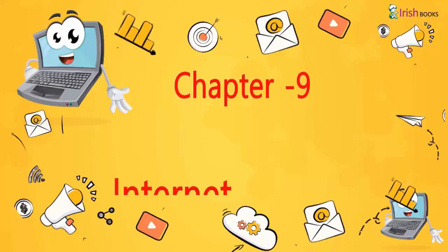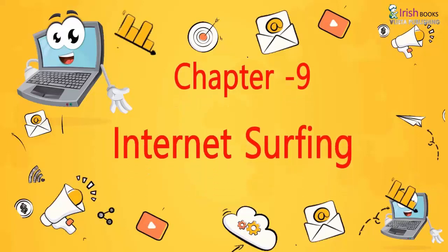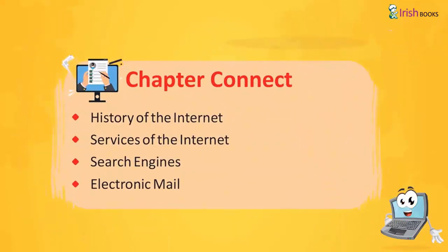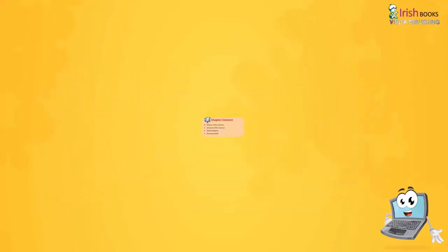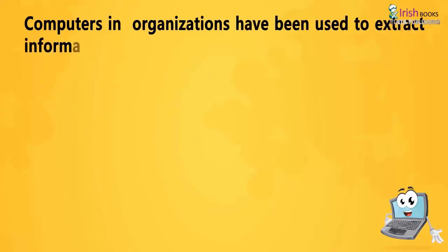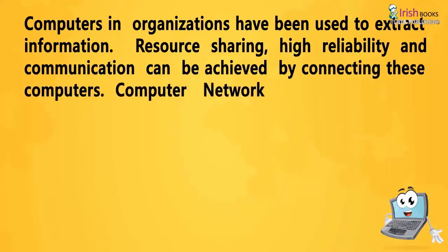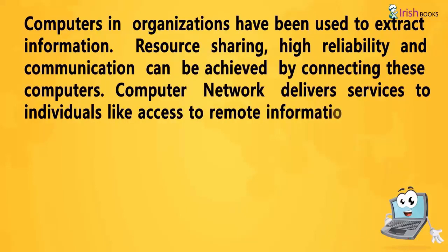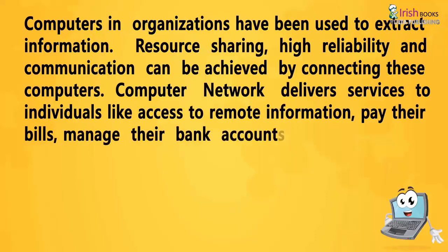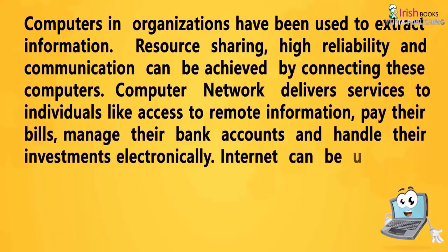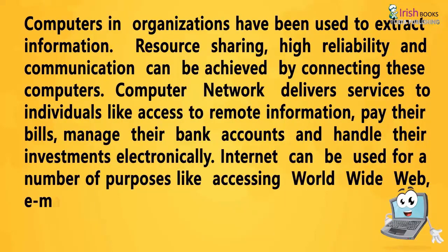Chapter 9: Internet Surfing. Topics covered include: Connect, History of the Internet, Services of the Internet, Search Engines, and Electronic Mail. Computers in organizations have been used to extract information. Resource sharing, high reliability, and communication can be achieved by connecting these computers. Computer networks deliver services to individuals like access to remote information, paying bills, managing bank accounts, and handling investments electronically. The Internet can be used for a number of purposes like accessing the World Wide Web, Email, etc.